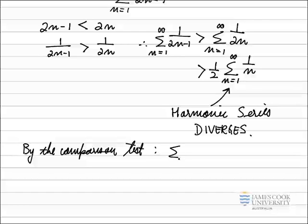The larger series, which is the series we're concerned about, the sum from n equals 1 to infinity of 1 over 2n minus 1 diverges. And so we have shown by the comparison test that the series we're concerned about diverges.